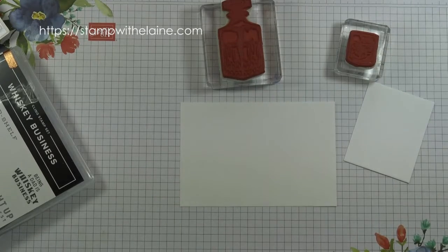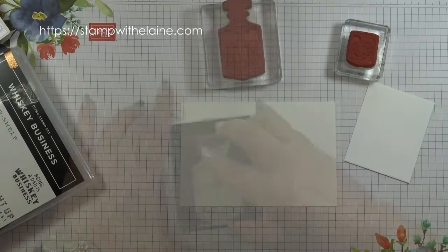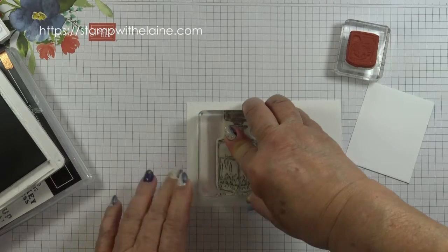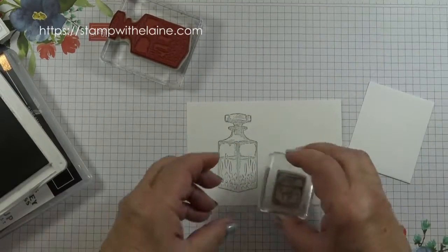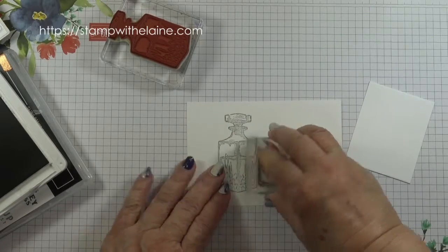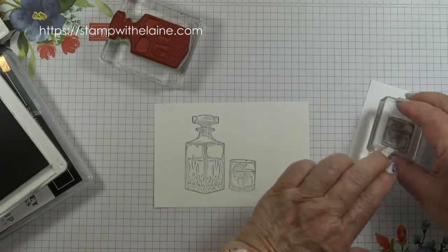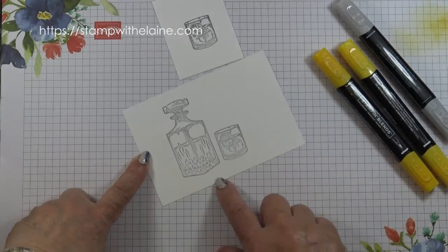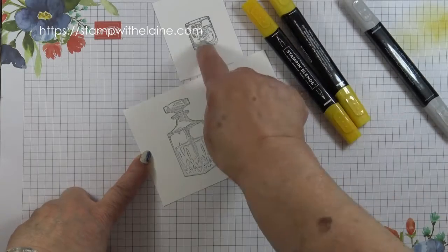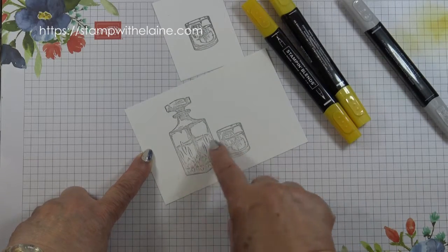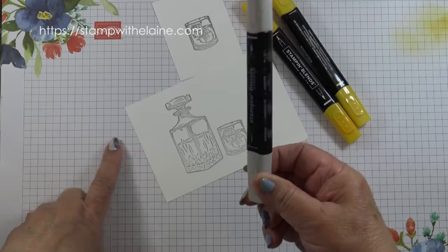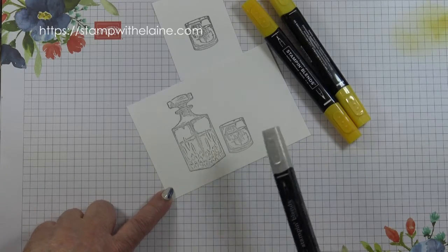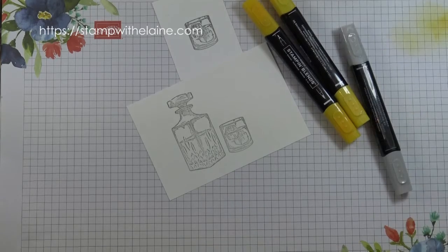Now bring in my smoky slate to stamp the whiskey bottle. Then stamp the whiskey glass next to it and one on a scrap piece of paper. Now I need to colour in the images so I'm using Mango Melody to colour in the whiskey inside the decanter and the glasses and then this one I'll use just to ground the whiskey bottle and the glasses so it doesn't look as though it's hanging in the air. So I'll speed this up.